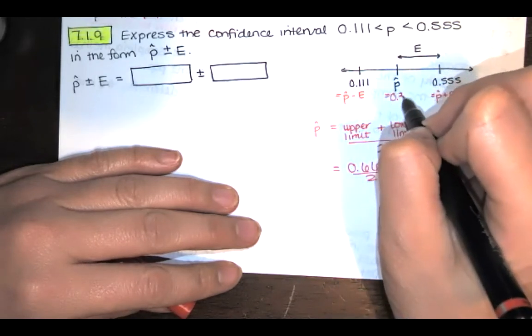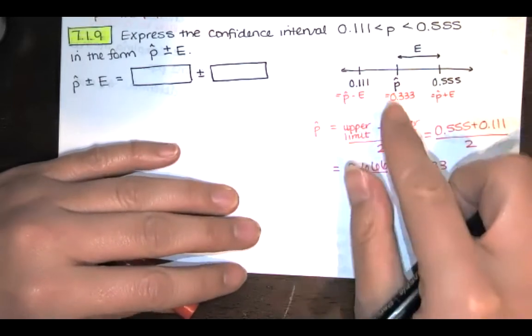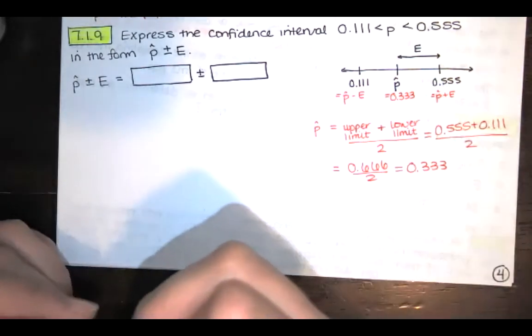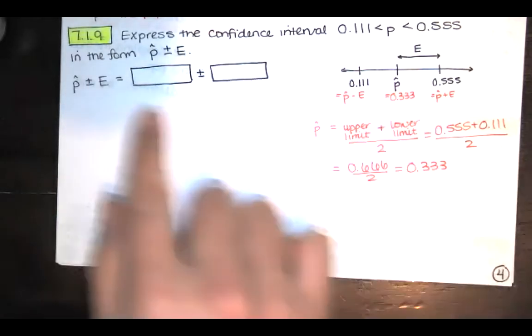So that is the number that's halfway in between 0.111 and 0.555, so that's the right p hat. That goes here.